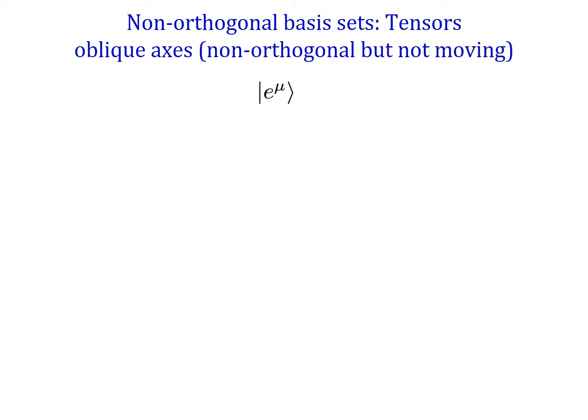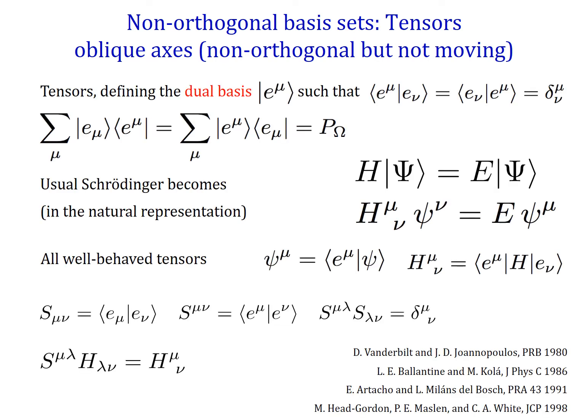Let me briefly flag the possibility of describing non-orthogonal basis sets using a tensor formalism, which is much more adequate for dealing with vector spaces with oblique axes. For non-orthogonal basis sets we introduce the dual basis — indicated with the same symbols but with the index upwards — which are vectors defined for each basis state fulfilling the conditions shown. Using the direct basis and the dual basis together, one can go from the Schrödinger equation to something that looks very similar to it, yielding a quite transparent formalism for formal manipulation.